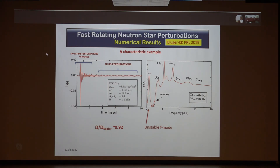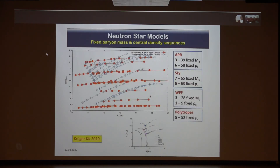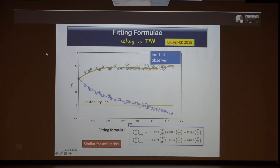This is the first time such a calculation has been done for fast-rotating neutron stars in full GR. We studied approximately 300 models for four equations of state and are extending to seven. With appropriate normalization of frequency versus the ratio of kinetic to gravitational energy (T/W), the results scale onto a universal curve for all equations of state, enabling extraction of neutron star parameters from observed oscillation frequencies.